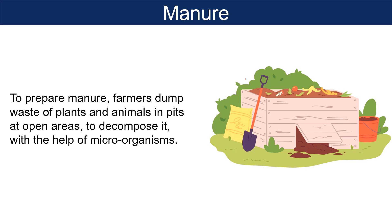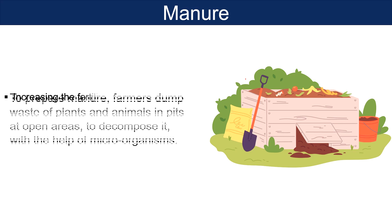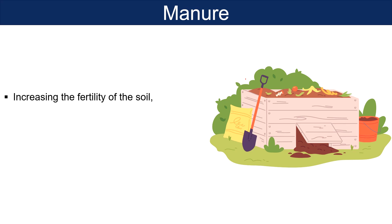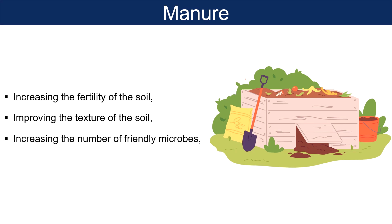Manure is considered very helpful in increasing the fertility of the soil by enhancing its capacity to retain water, improving the texture of the soil and increasing the number of friendly microbes. Moreover, manure makes the soil porous, which facilitates the exchange of gases.